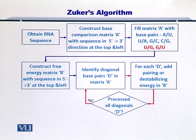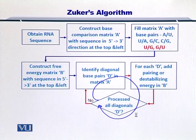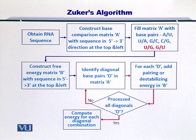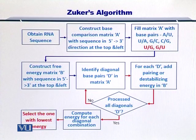If you have diagonals that are remaining, then you go back and keep running this loop. Once all the diagonals have been processed and their energies have been calculated, you can look at the possible combinations that exist. If there are two diagonals, then two combinations will exist, but if there are three diagonals, the number of combinations will increase rapidly. You have to compute the energy for each diagonal combination, and once you have done that, you can select the set of diagonals with the lowest free energy.